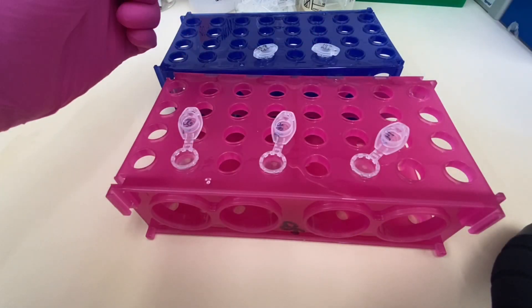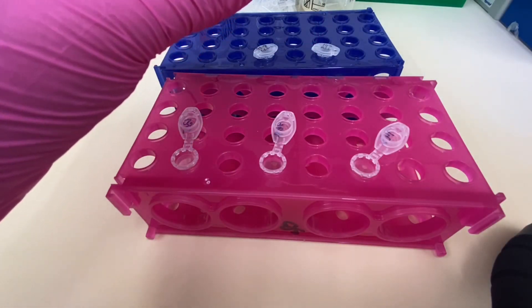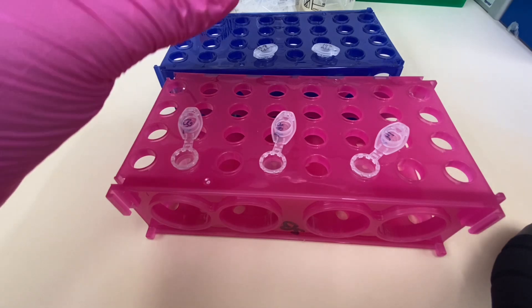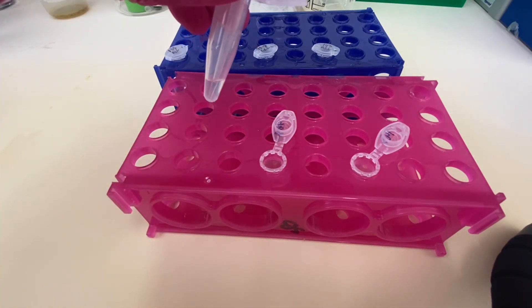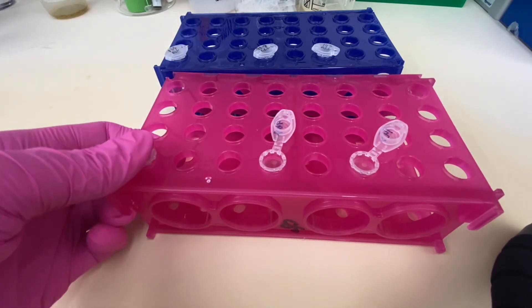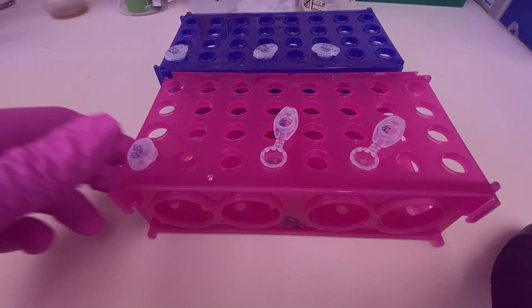After the buffer is in the tubes, now I'm going to add 5 microliters of my samples to each of the tubes. I always like adding the solution that has a higher volume first. In this case, it's the buffer. That way I'm convinced that I'm mixing things properly.